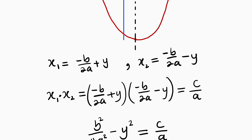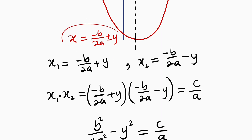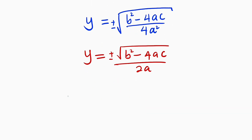Look at these two equations — they are symmetrical. Therefore, we can say that x equals negative b divided by 2a plus or minus y, because we have plus for one root and minus for the other. So we can substitute the value of y into this equation. In general, x equals negative b divided by 2a plus or minus y.